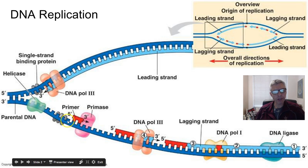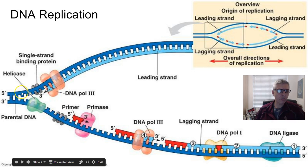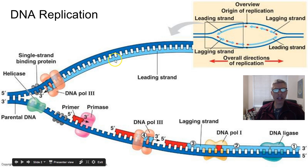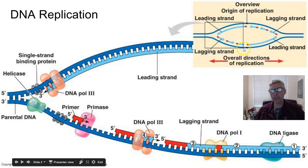This is what they call the semi-conservative model. In other words, you end up taking the parental strand — the old strand, shown in dark blue — and creating a new daughter strand next to it. So each new strand will be half parental and half daughter.